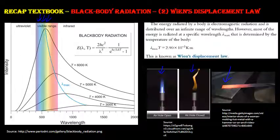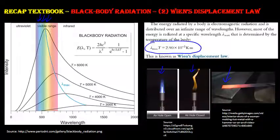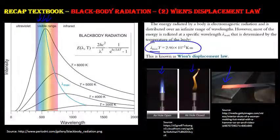The Wien's Displacement Law equation is already in the data booklet, so you don't need to memorize it. The key is identifying λ_max as the peak wavelength — the wavelength of highest intensity in the whole electromagnetic spectrum. Objects still emit infrared and ultraviolet, just not as intensely as at the peak wavelength.